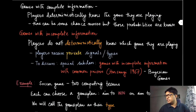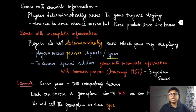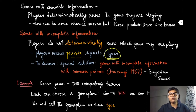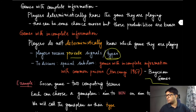In the complete information setting, players deterministically know the game they are playing, but in the incomplete information setting they do not. There is some information available to each player — private information which we call their types. In this discussion we focus on a special subclass called Bayesian games. As the term 'Bayesian' implies, you have a prior distribution, and based on that and your own type, you form a Bayesian belief about the other players' types.